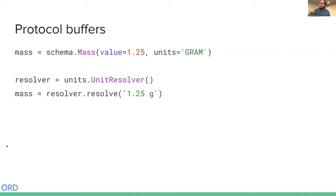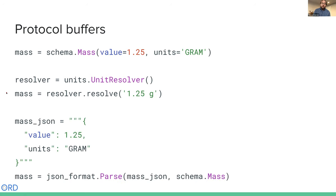We've also built additional Python helper libraries on top of the protocol buffer bindings that allow you to do things like parse strings into these particular classes, so it's much easier to enter things as you might write them down in your lab notebook. And if you really like JSON, you can always use JSON to go back and forth between protocol buffers and JSON.